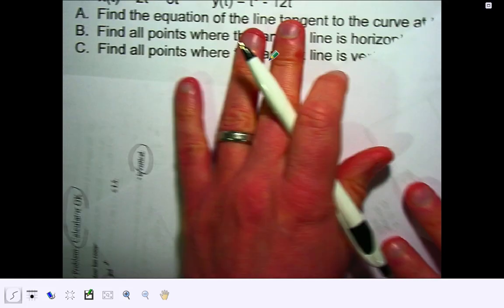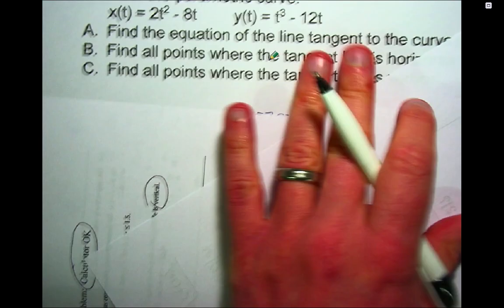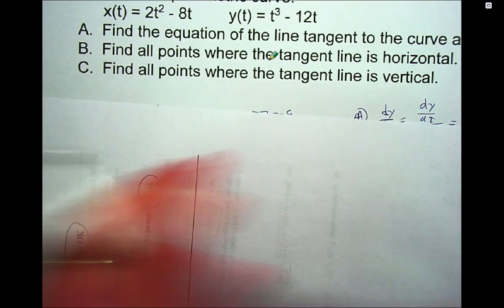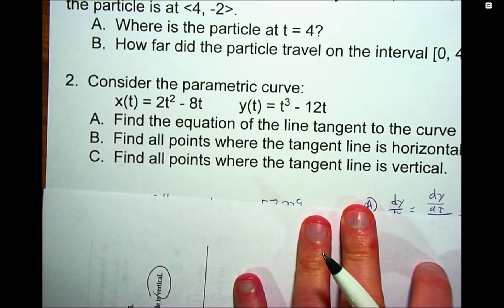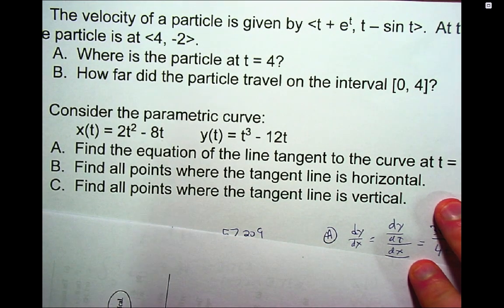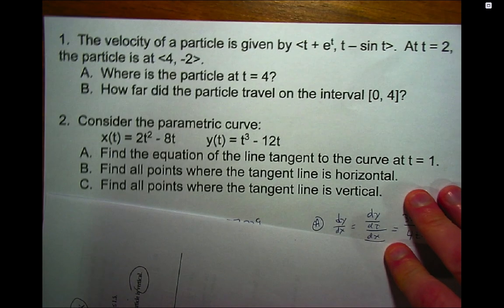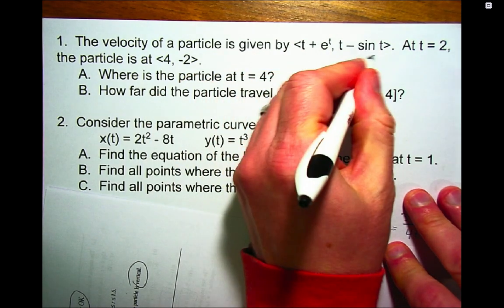All right, so here's another parametric problem for you to check out. So this time we notice we're given the velocity of the particle, and make sure we note that this is not the position function.